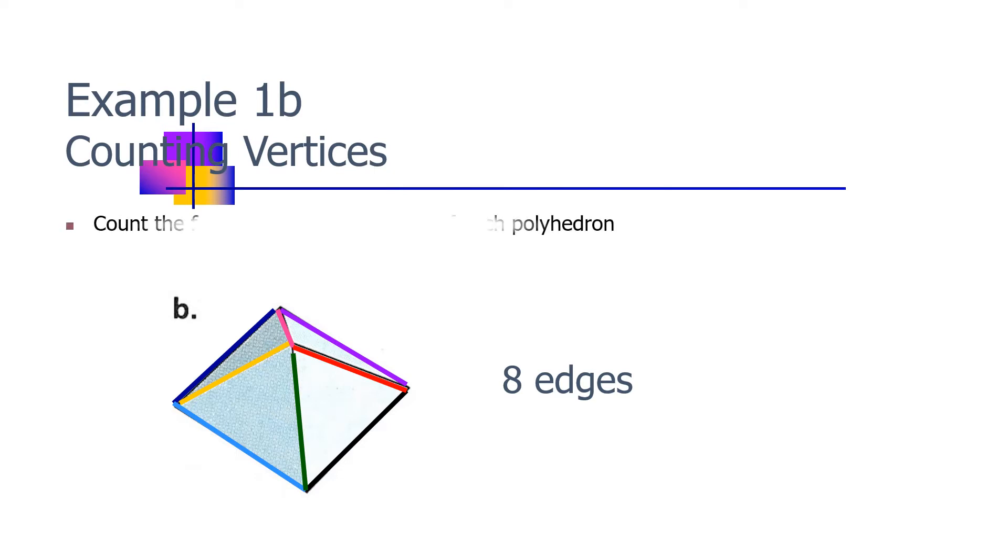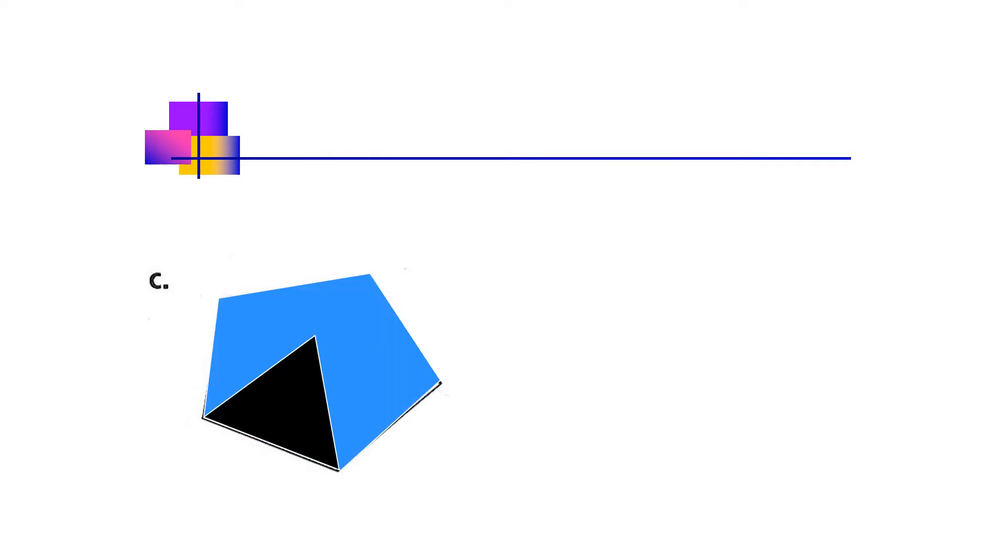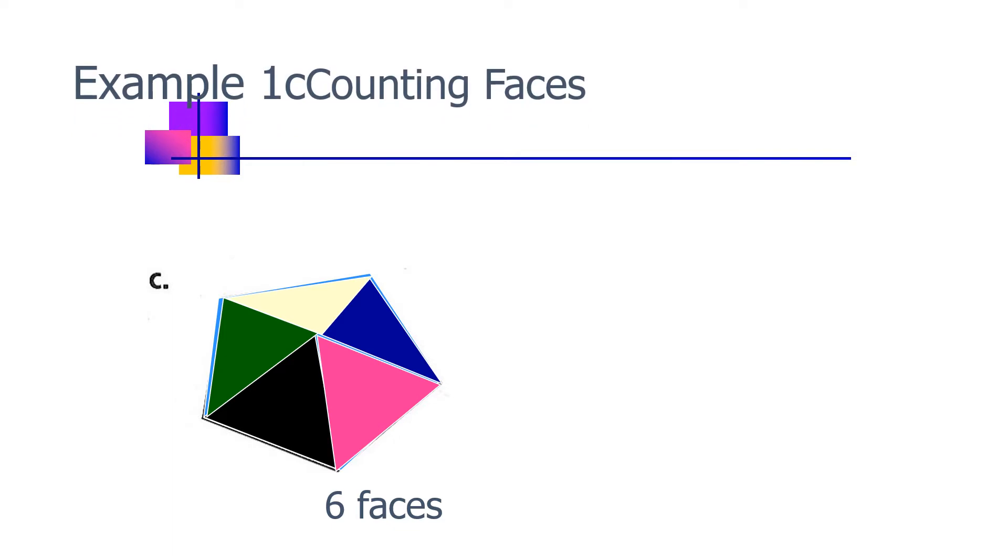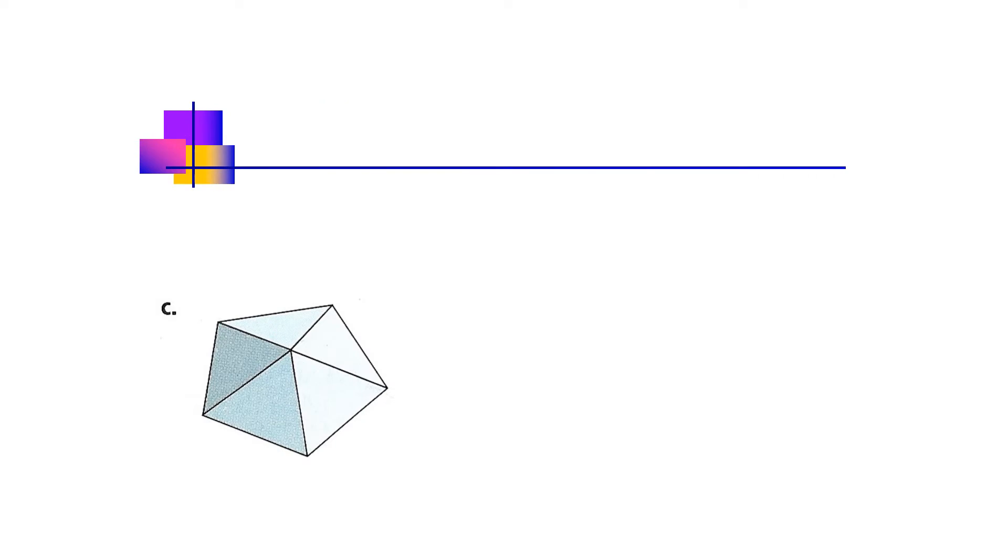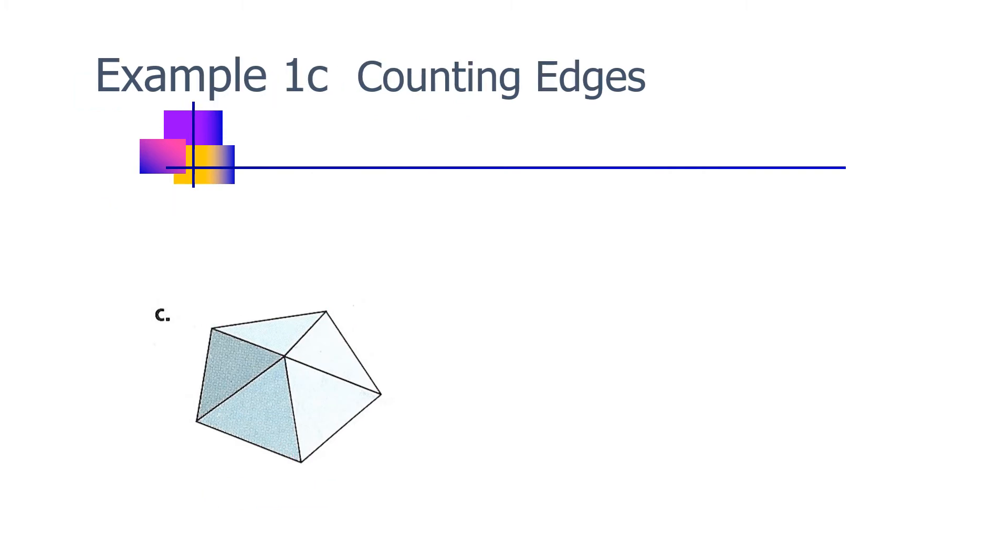Another example: How many? There are six faces for this example. And then let's count the vertices. There are six vertices. Next, the edges. One, two, three, four, five, six, seven, eight, nine, ten. So there are ten edges.